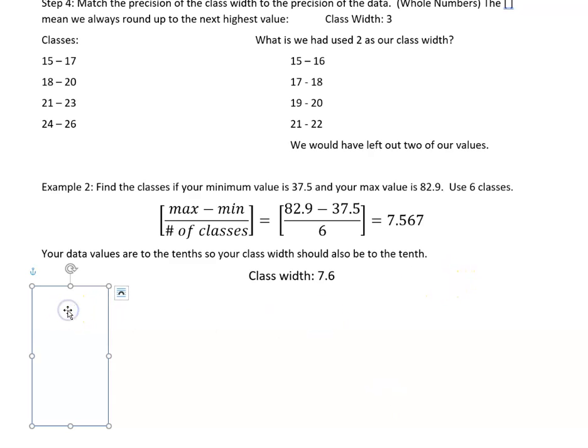And then what you're going to do to find your classes is start with your minimum value, which is 37.5, and add 7.6. That gives you 45.1. Add 7.6 again, add 7.6 again—you're just going down and adding 7.6 each time until you get 6 classes because that's what you want. Then, because we're talking about tenths, you would subtract a tenth and go back up here and say this must be 45.0, because it's one tenth less than this.